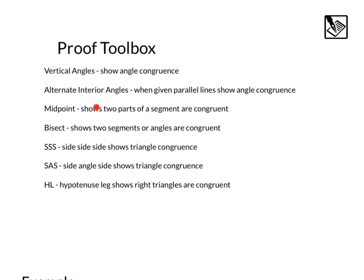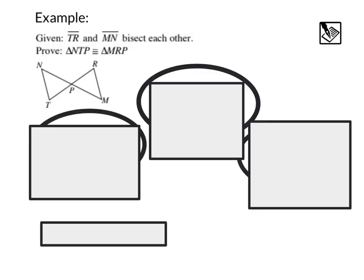The midpoint will tell us that the two parts of a segment are congruent to each other. And when things bisect each other, it shows that two segments or two parts of an angle are congruent to each other. And lastly, we talked about these already: the side-side-side, side-angle-side, and hypotenuse leg relationships will show that two triangles are congruent to each other. Let's try applying a few of these.